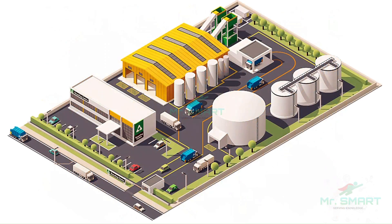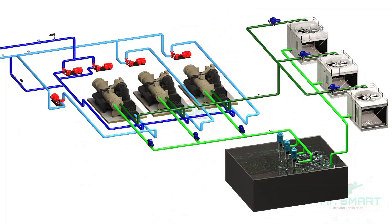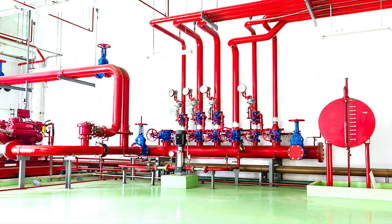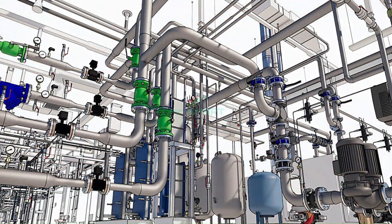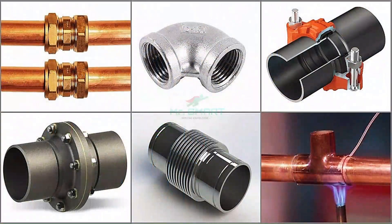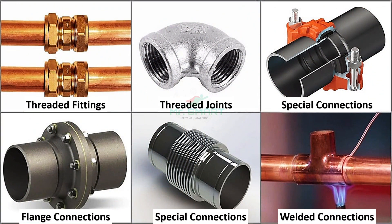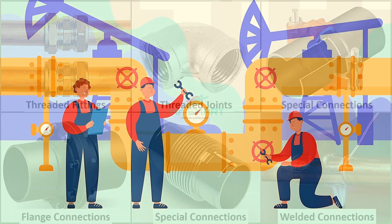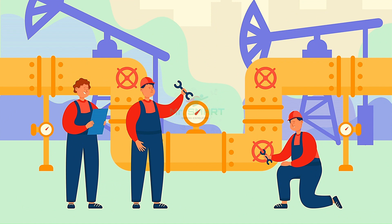Whether small in scale or sprawling across large industries, pipelines are inevitable in various sectors. From HVAC and chiller pipelines, firefighting systems, and steam distribution networks to chemical and gas transfer pipelines, pipelines are everywhere. These industrial pipelines are typically joined by welding, threading, bolting flanges, and mechanical couplings, each with its own strengths and weaknesses. Any flaw or improper installation can lead to catastrophic failures like leaks or bursts. So, how do we ensure they're safe and reliable?